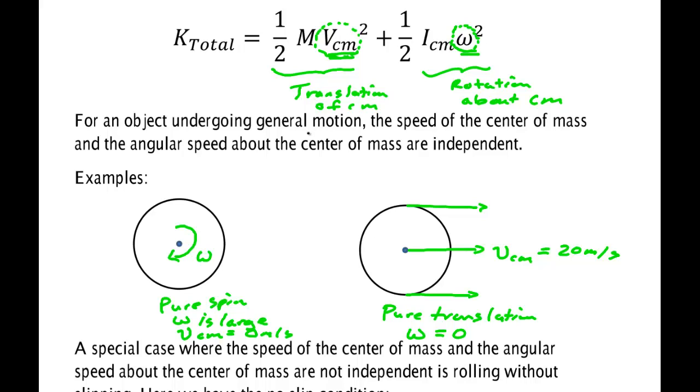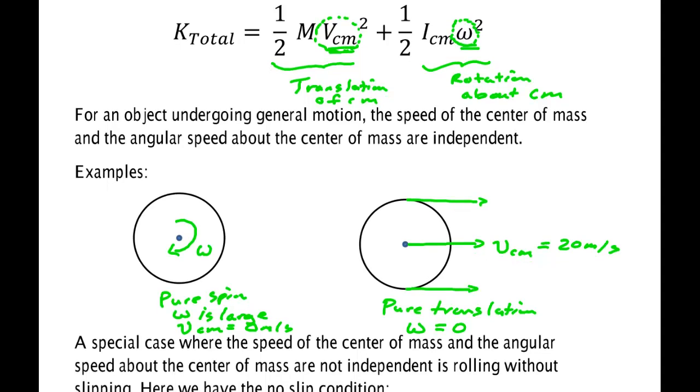A special case where the speed of the center mass and the angular speed about the center mass are not independent, where they are connected, is rolling without slipping. Because when they roll without slipping, if this thing is going really fast and you put it on a surface, when it quits spinning without slipping, this omega will change and this thing will begin to move sideways, giving it some center mass speed. They are not independent anymore.